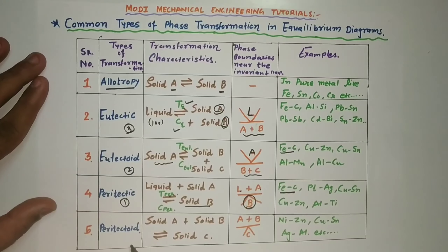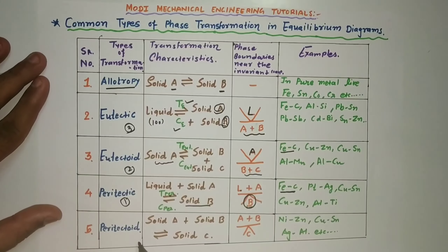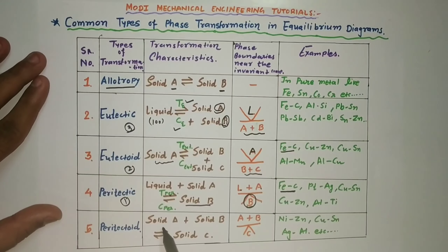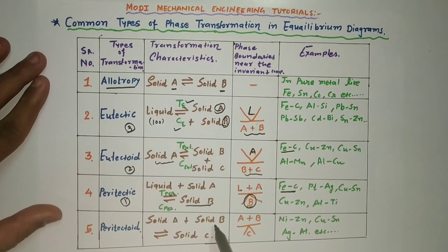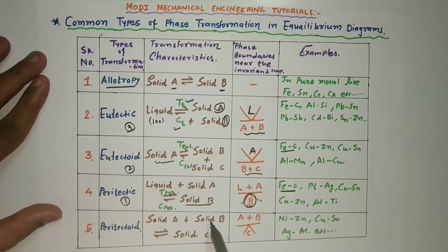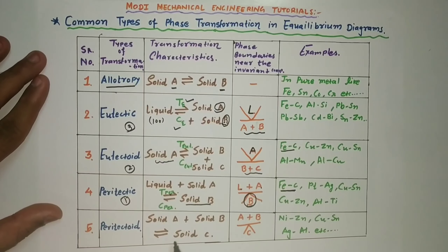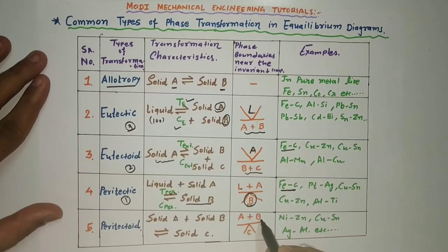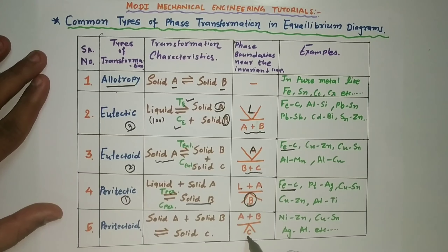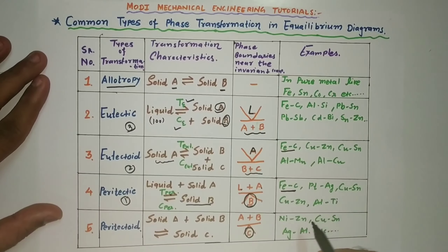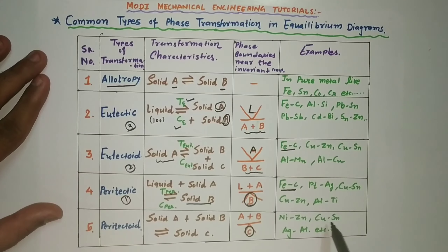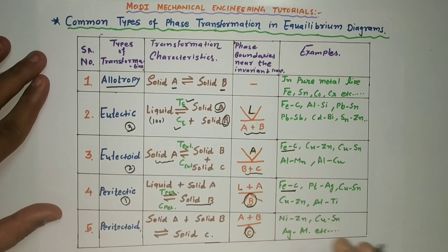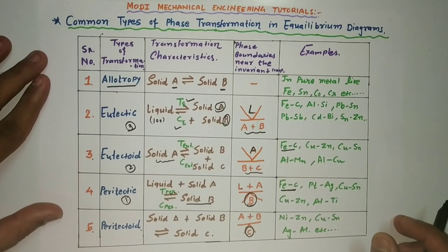The last type is peritectoid transformation. In peritectoid transformation, solid A plus solid B — that is, two solids — convert into a single new solid C. Symbolically: A + B → C. Examples include Ni-Zn, Cu-Sn, Ag-Al, and many more. This is the summary of common types of transformations in equilibrium diagrams.